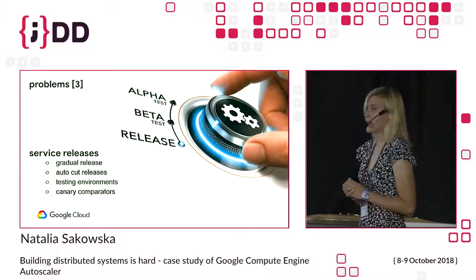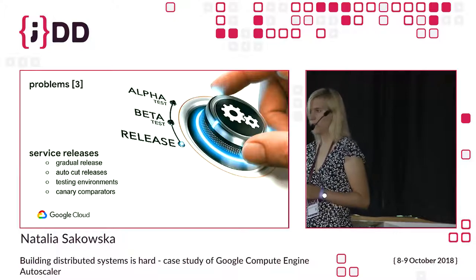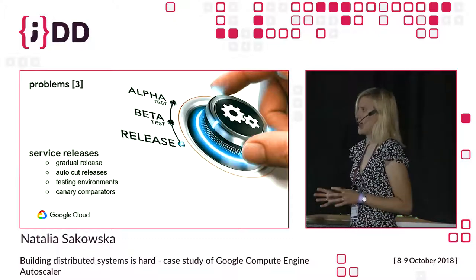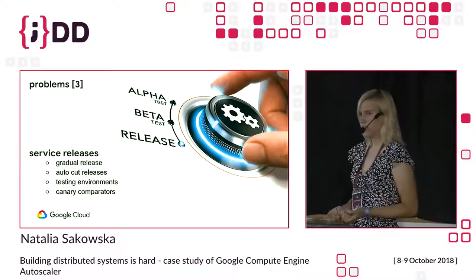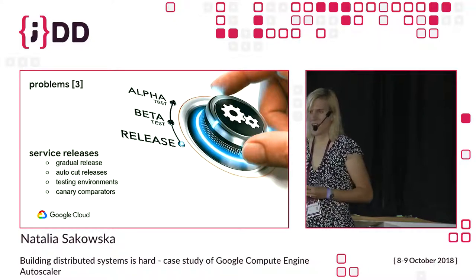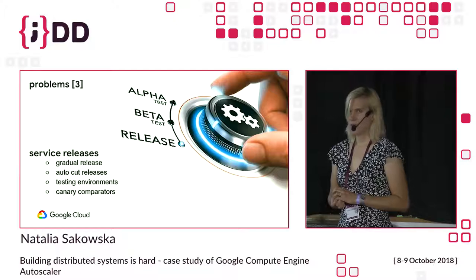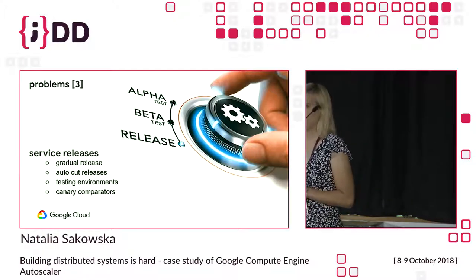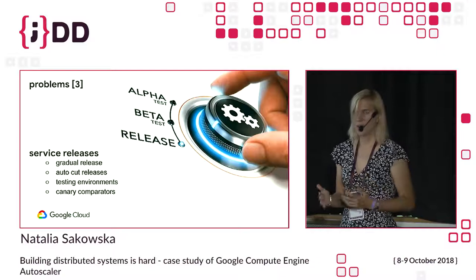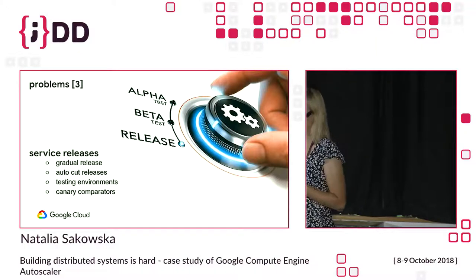We do push on greens, canary binaries, and canary comparators — we look at how the old version and new version are working and try to compare them. Not every team uses all these techniques; each team designs their own approach. But we have a very strong culture of testing at Google, and we are okay with sacrificing the pace of new features because we want to be sure we are not going to break existing clients.